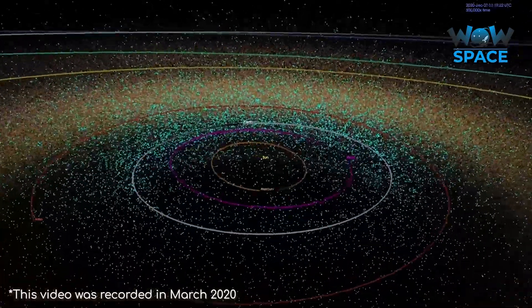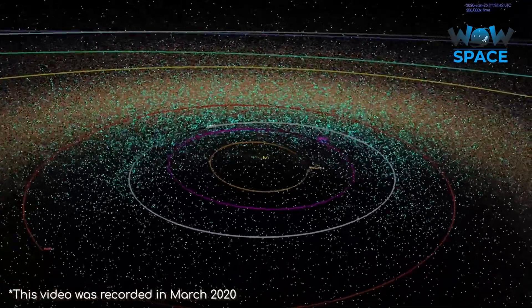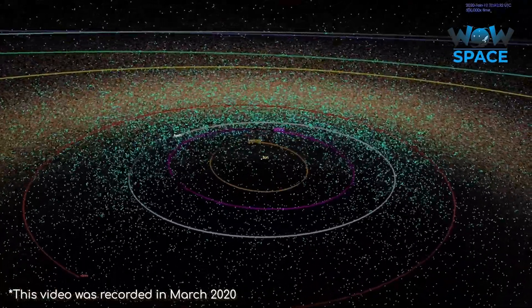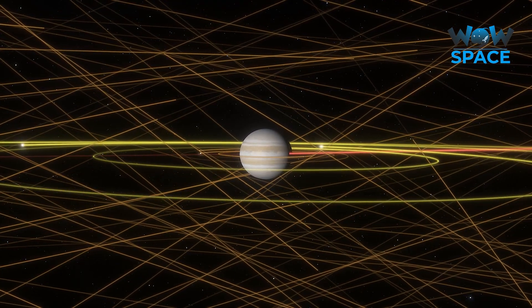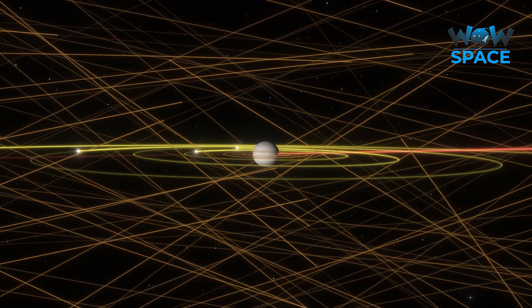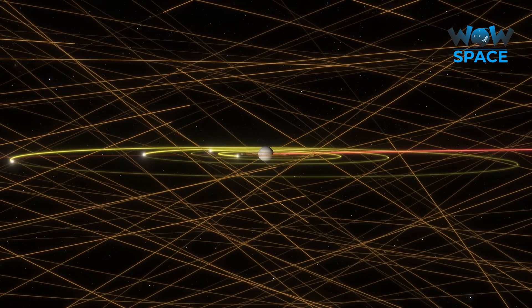With so many asteroids hurtling around the solar system, it's a wonder that Earth only has one moon. Because beyond the inner solar system, the gas giants have a lot more, some of which are regular moons, plus a lot of irregular moons.